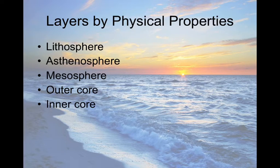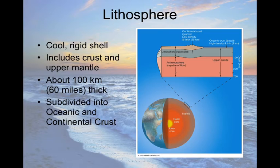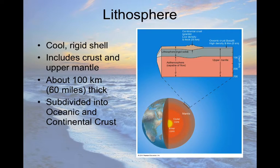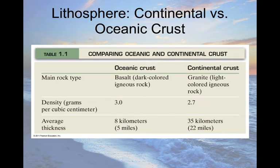There are five layers classified by physical properties. The lithosphere is the layer you live on. Comparing it to the chemical composition model, it's made up of the crust plus a little bit of the mantle. It's subdivided into two parts: oceanic and continental crust. It's about 60 miles thick on average — quite thick. We haven't actually ever drilled all the way down to the mantle, though there are a few places where it's thinner.